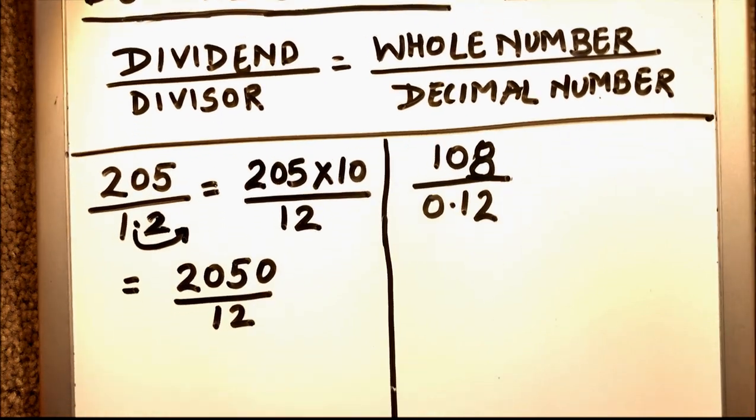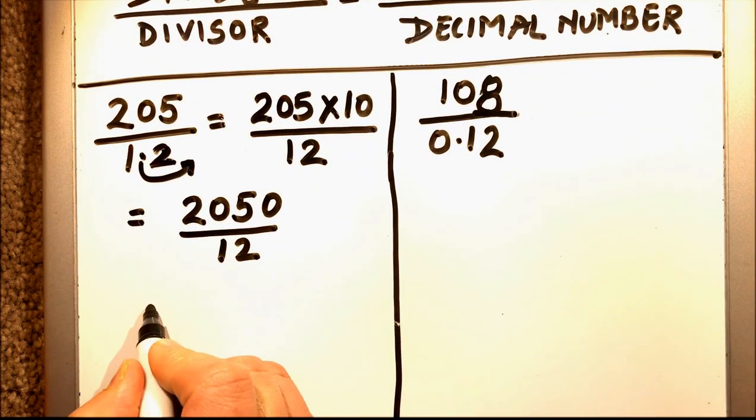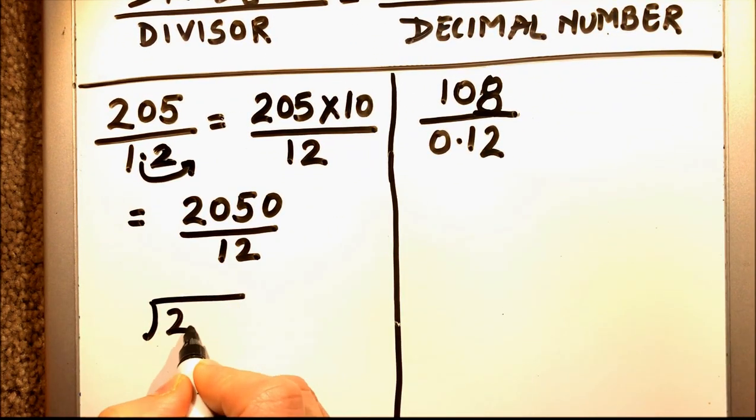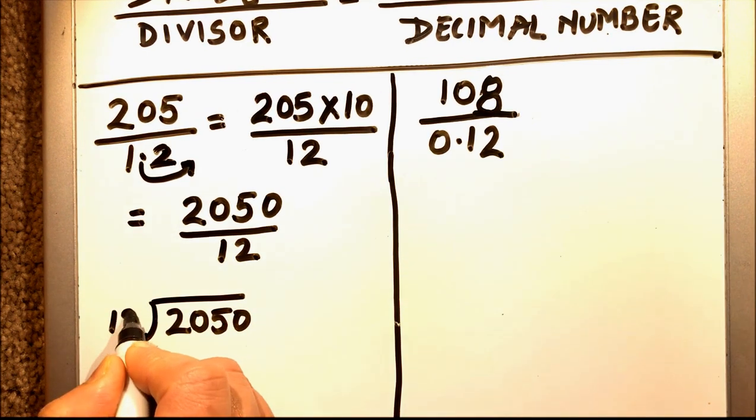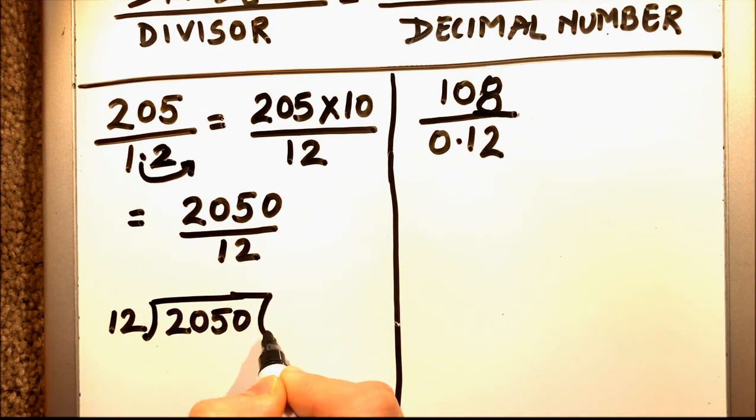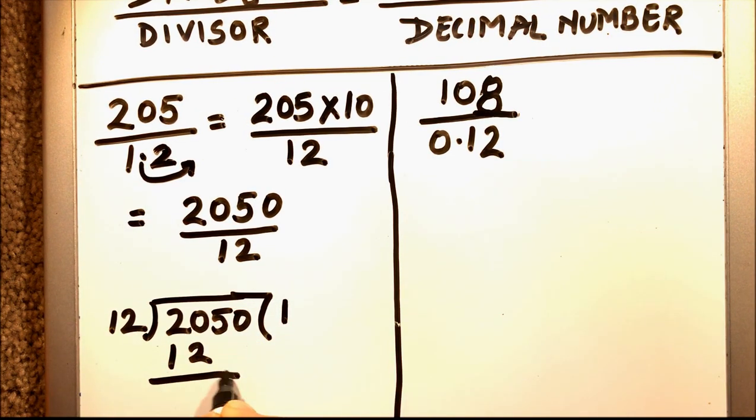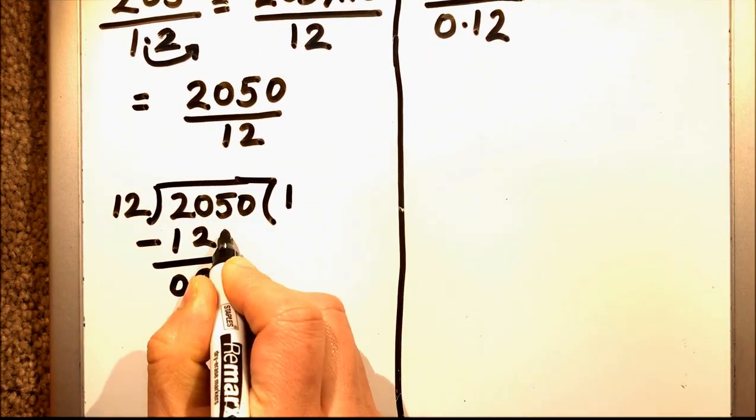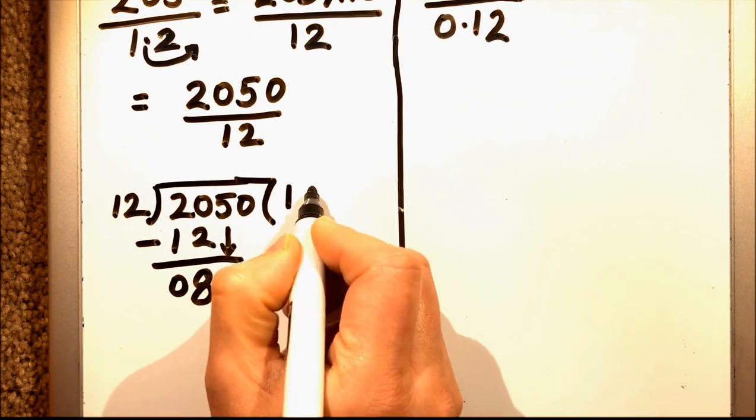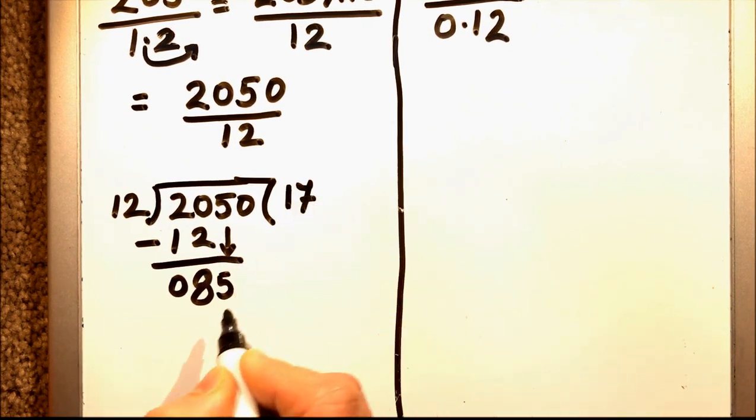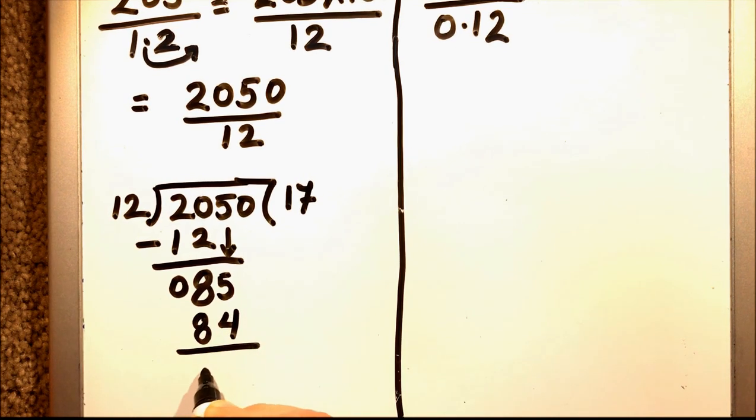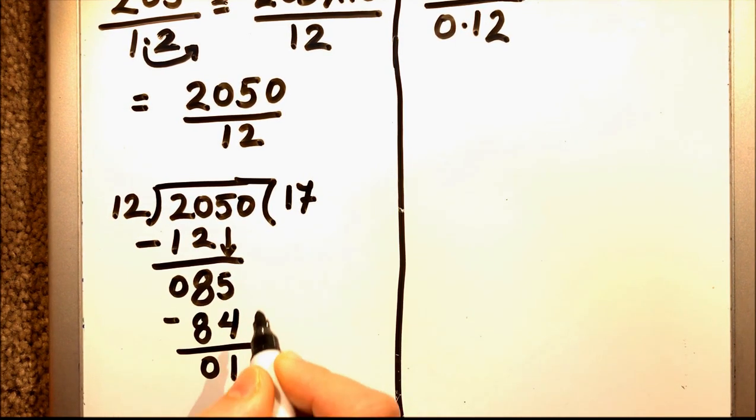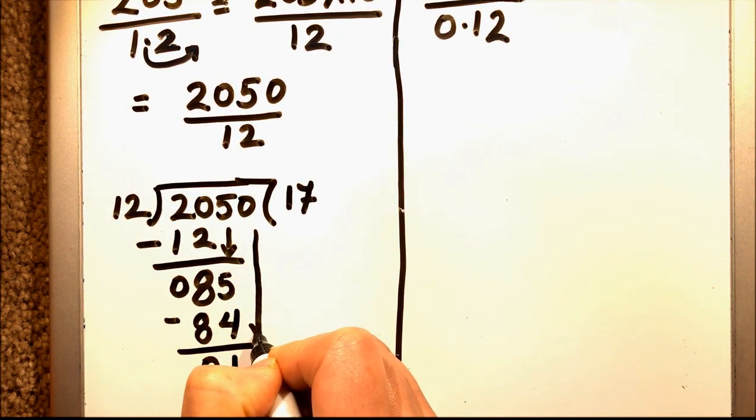And then we can divide this as a normal division. So 2050 divided by 12. 12 times 1 is 12, and here it is 8. We'll drop down the next number and then we'll count the tables of 12. 12 times 7 is 84, remainder is 1.